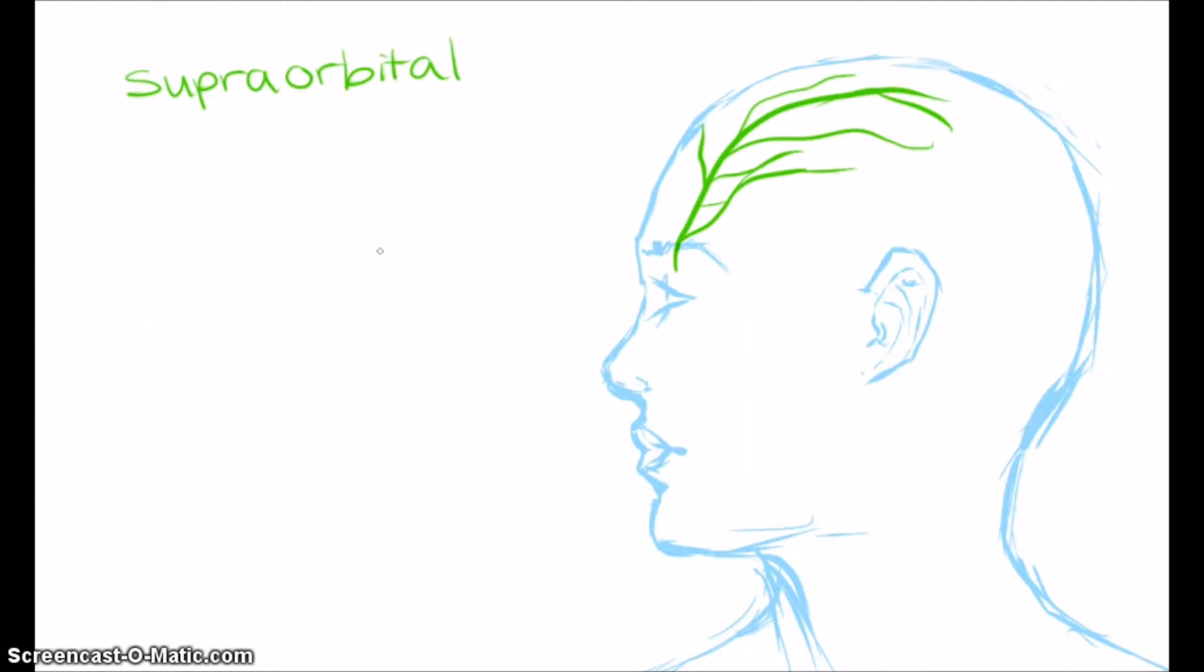The supratrochlear, which affects the upper side of the nose and between the eyes. And the nasal, which reaches the tip and lower side of the nose.